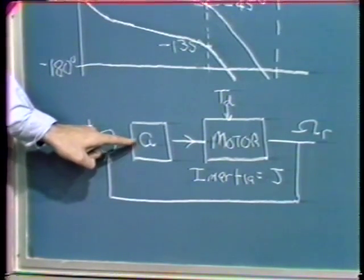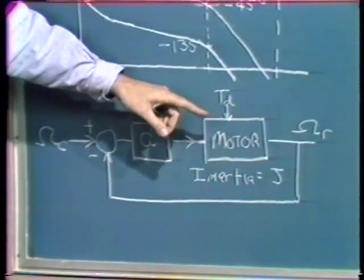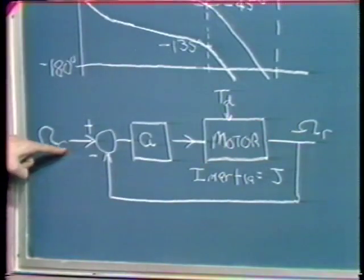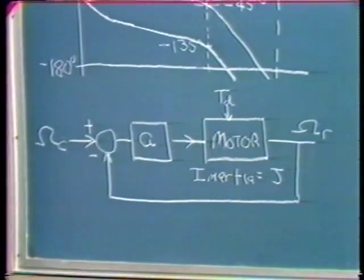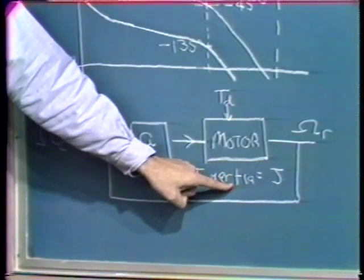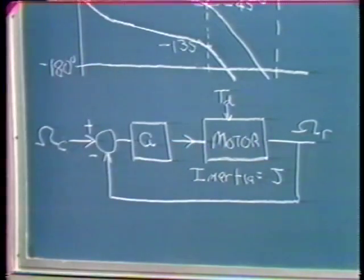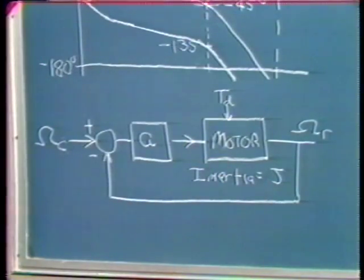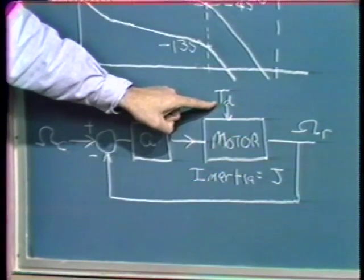Our system consists of an amplifier driving a motor. We measure the velocity with a tachometer and feed back information concerning output velocity. We compare that with the commanded velocity, amplify the difference, and apply that voltage to the motor. The total inertia of the load — including armature inertia and additional rotating load — is J. The objective is to keep this velocity fixed as we apply torque disturbances.